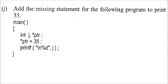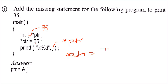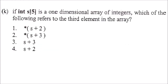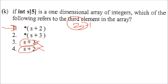To print 35 using a pointer PTR: if PTR is given a value and you want to print it, either replace J with *PTR, or assign J=35 and set PTR = &J, then print *PTR. For int S[5], the third element is at index 2 (third means 3-1=2). The addresses can be ruled out; the correct answer refers to the element value at index 2, which is the first option.